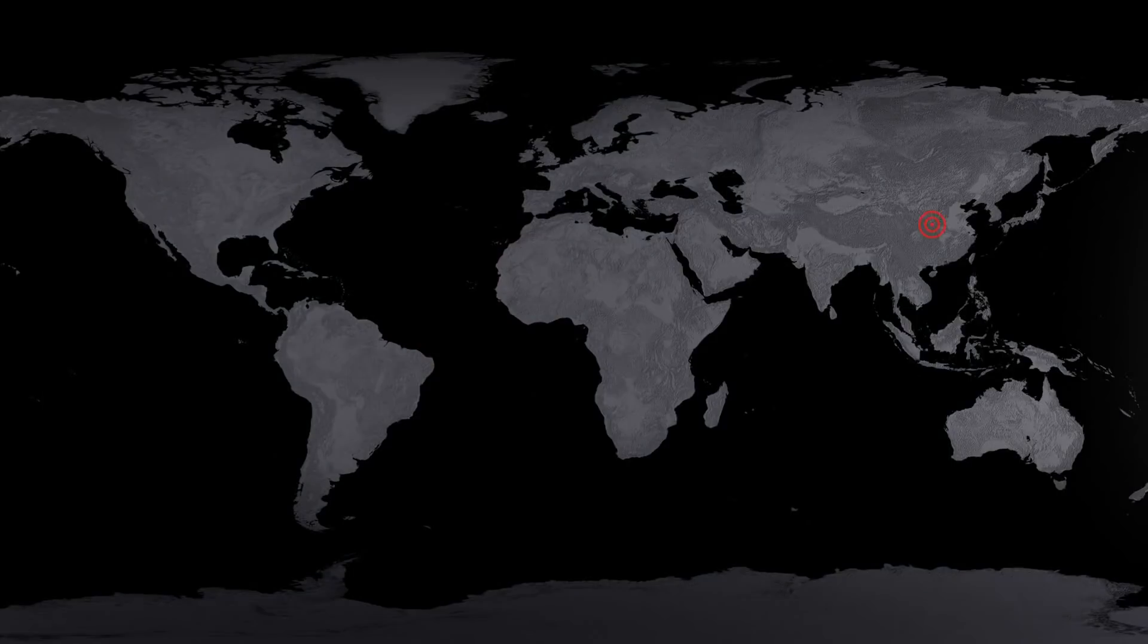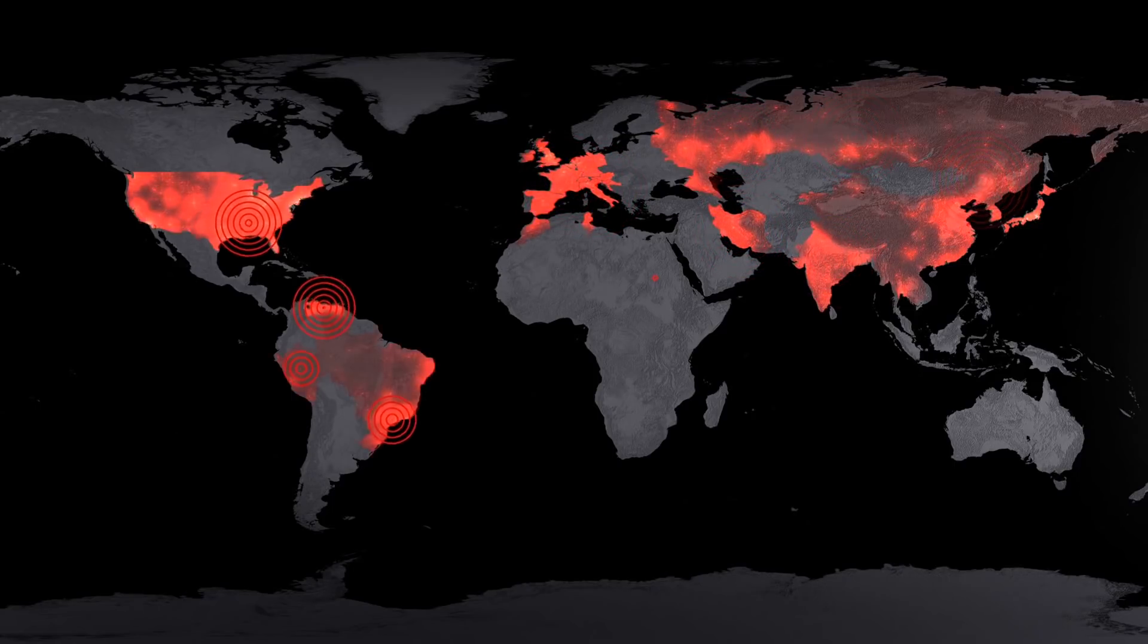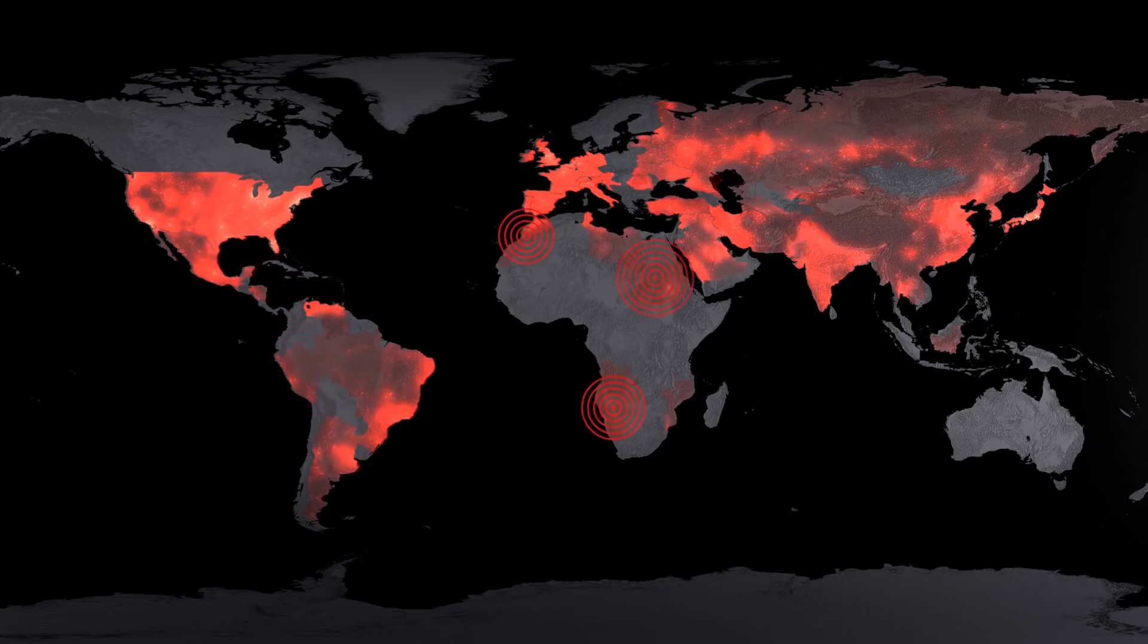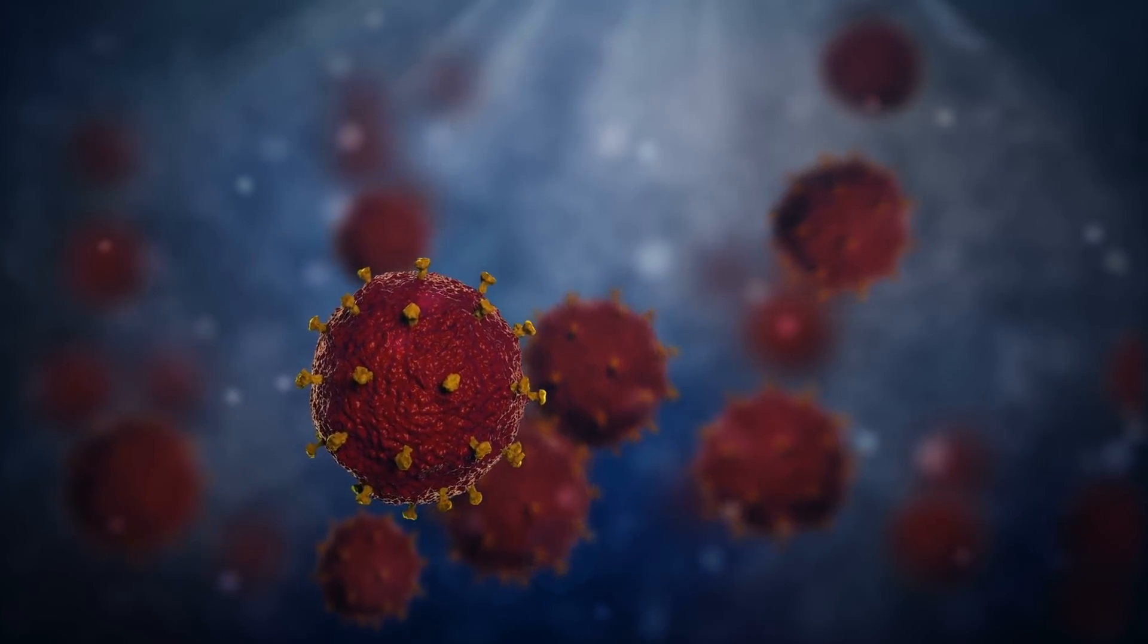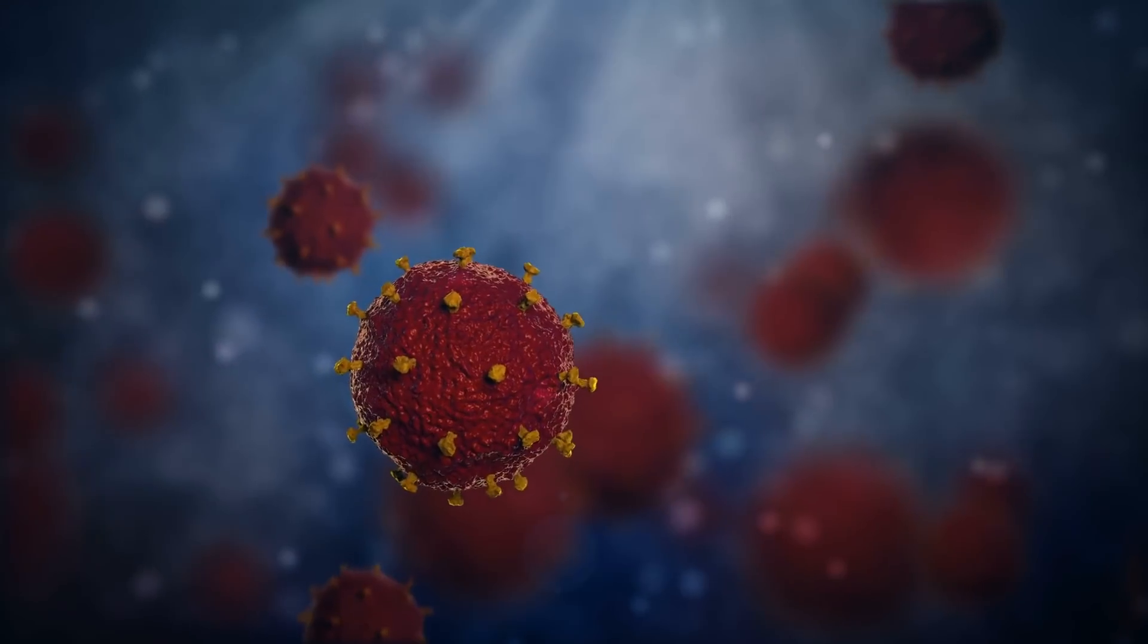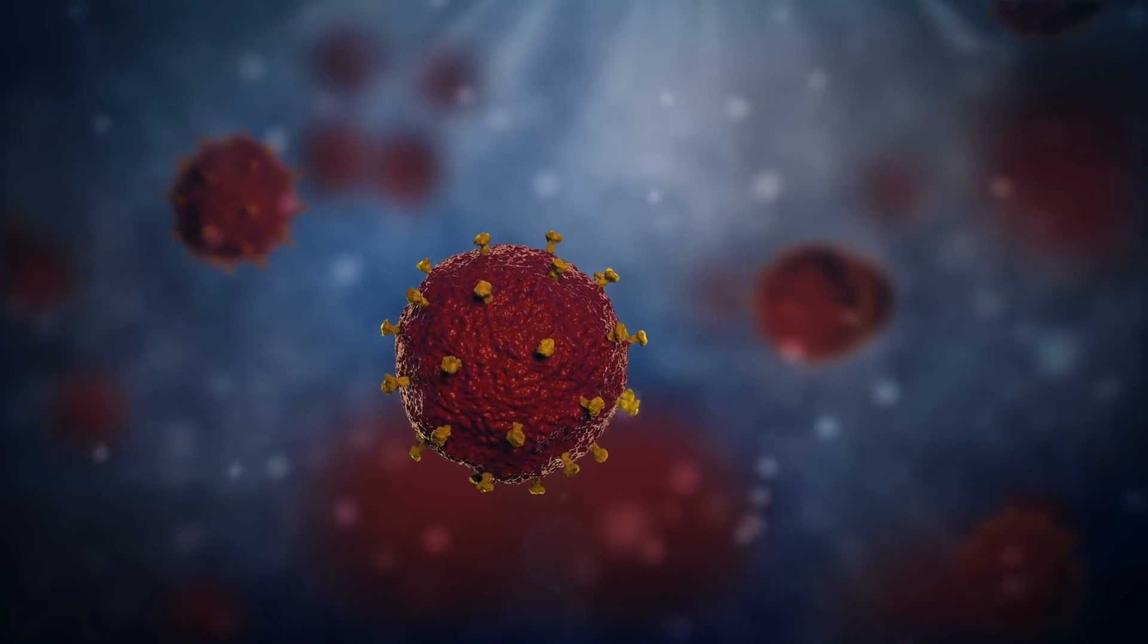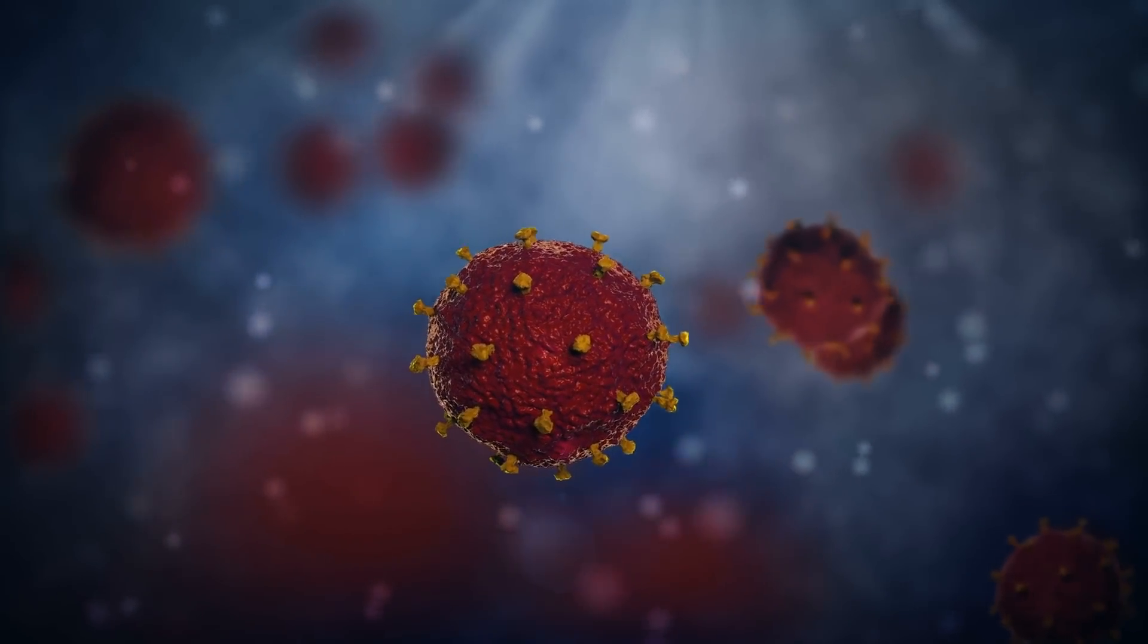Now let's move on to HFRS. The Hantaviruses found in Europe and Asia, including Hantaan, Dobrava, Saaremaa, Seoul, and Puumala are all known to lead to HFRS. Unlike HPS, HFRS is an umbrella term for a handful of diseases. These diseases include Korean Hemorrhagic Fever, Epidemic Hemorrhagic Fever, and Nephropathia Epidemica.